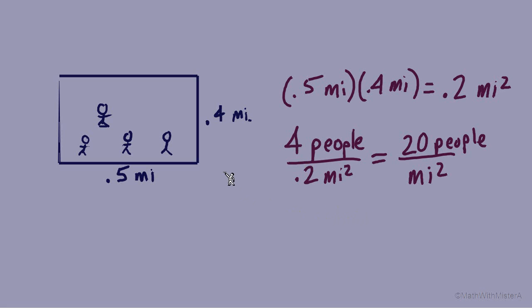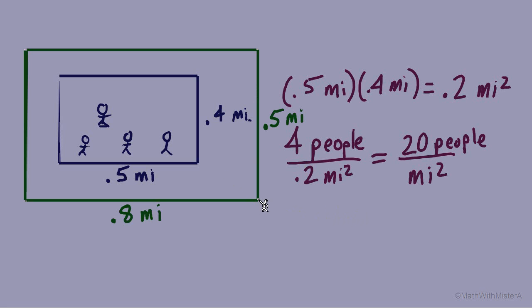Now consider if we look at a larger area. To think about the density or how crowded it would be if people were evenly spread out in this larger area, first calculate the actual square miles of the larger area. 0.8 times 0.5 equals 0.4 square miles.